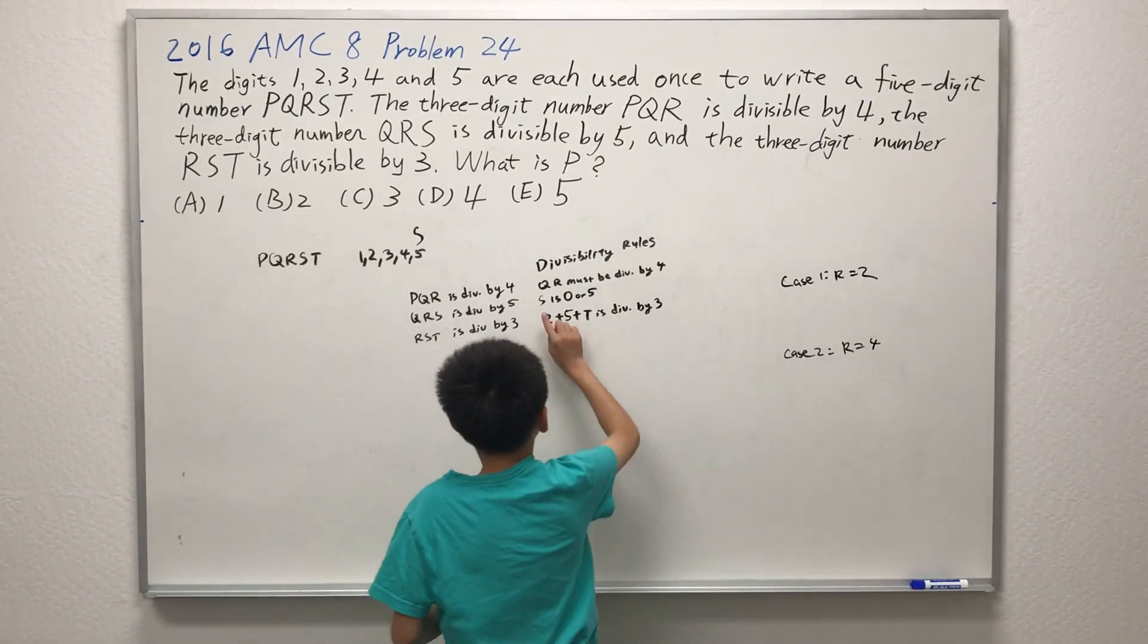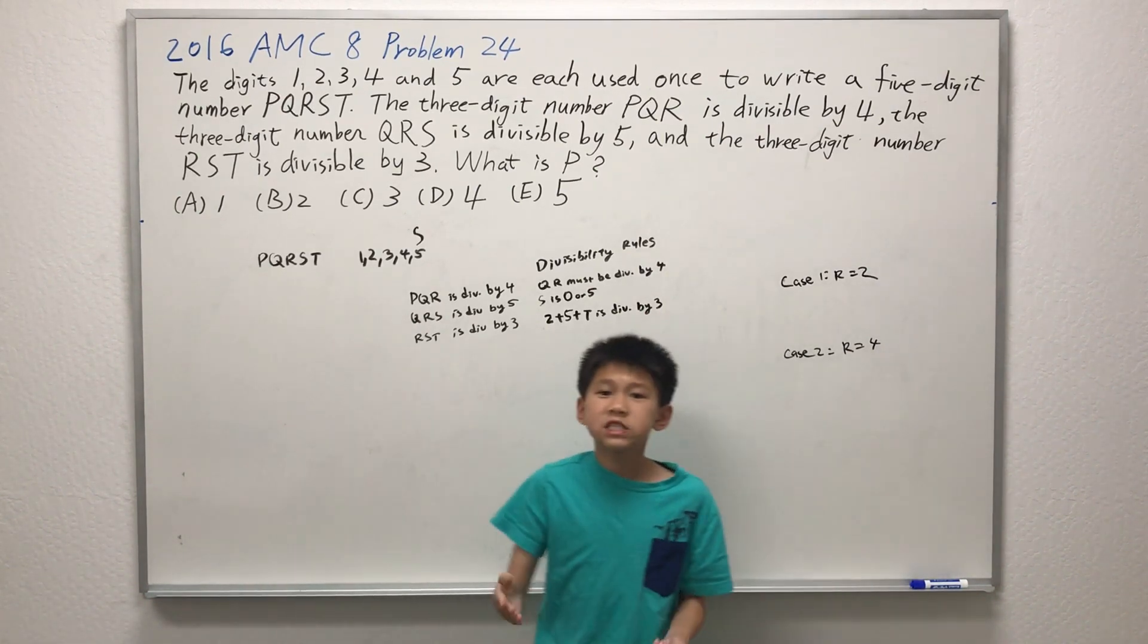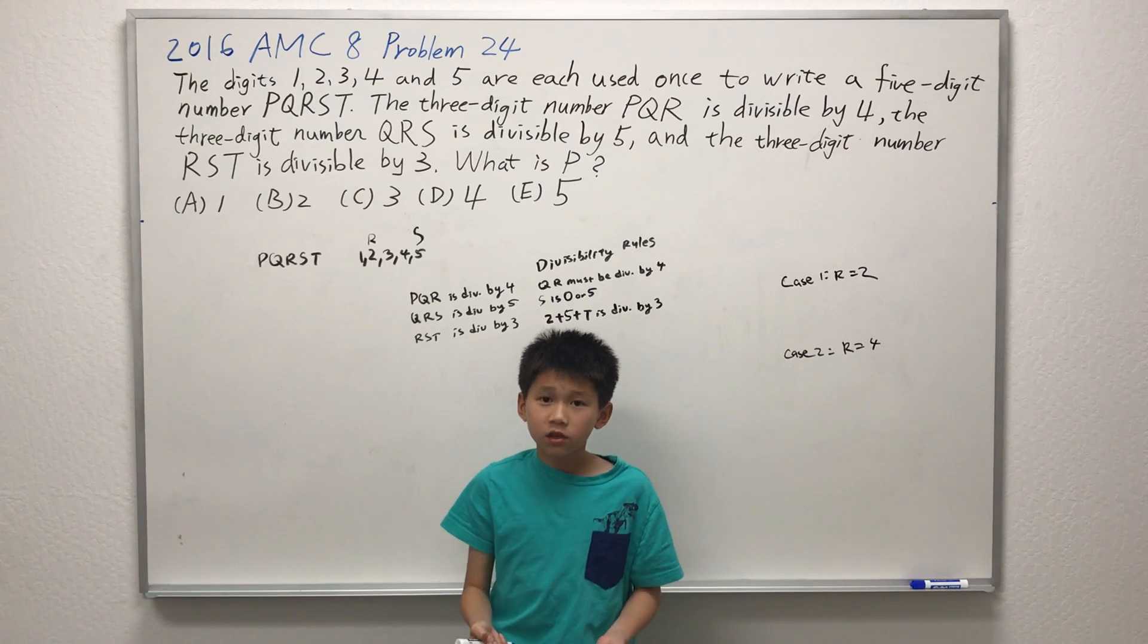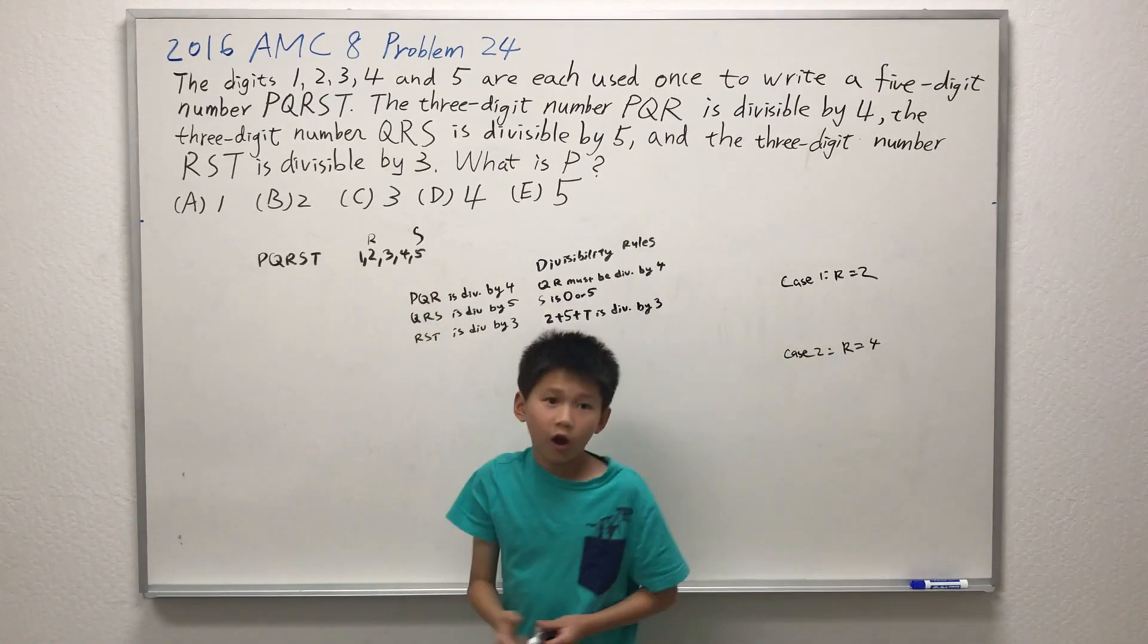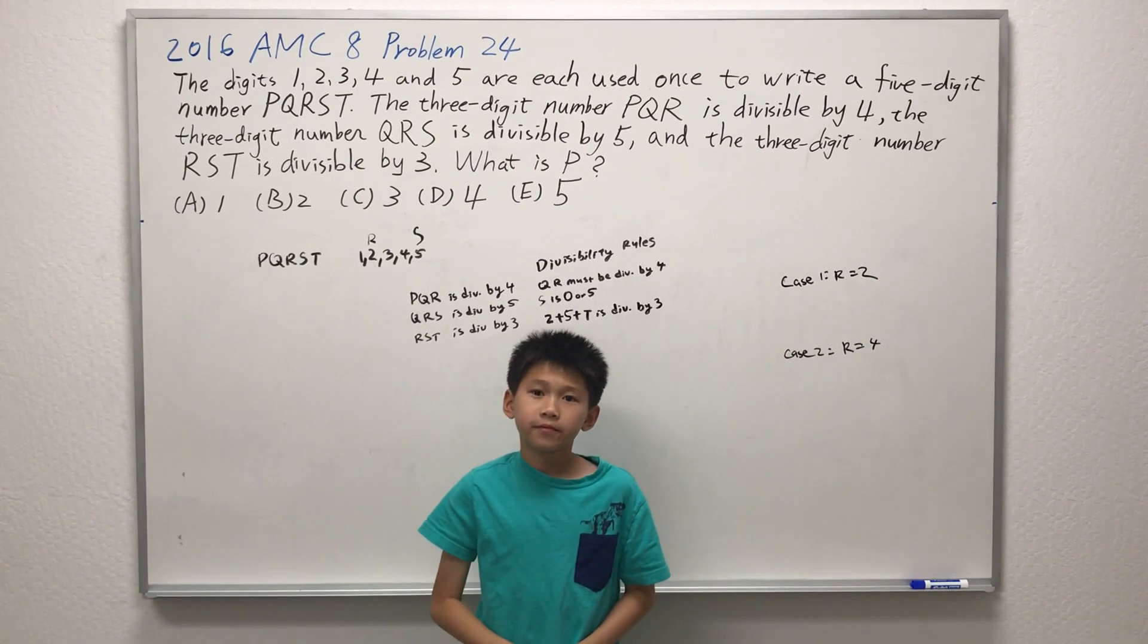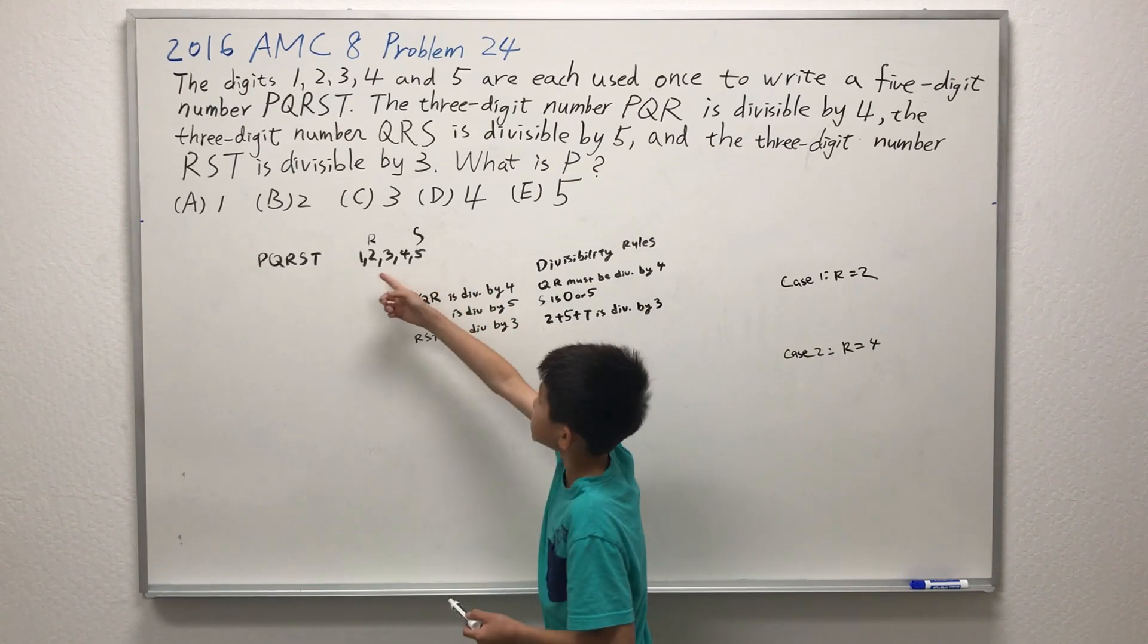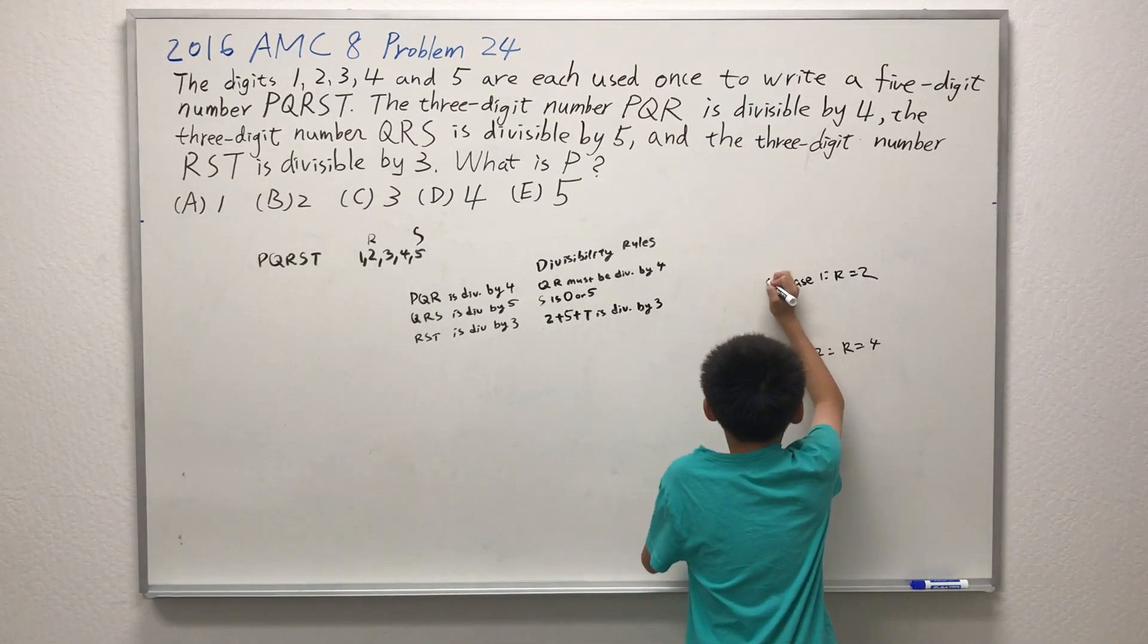Let's try case 1 first, where R is equal to 2. We can plug in the value of R to 2, where 2 plus 5 plus T is going to be divisible by 3. There is now only a limited amount of values where T can be. So in this case, we have assumed that R is 2. Let's try where T is 1. If T is 1, then 2 plus 5 plus 1 is 8. It is not going to be divisible by 3. T cannot be 2 because otherwise it is going to repeat and overlap with R. And that cannot happen. For the problem states that the digits 1, 2, 3, 4, and 5 are each used once. So that means it cannot repeat. So we can go to 3. 2 plus 5 plus 3, 10, is not divisible by 3. So we move on to the next one. 4, 2 plus 5 plus 4, is not divisible by 3 as well. And for the same reasoning as why we can't do the number 2, we can't do the number 5 either because it's going to repeat. Therefore, case 1 is an invalid case.